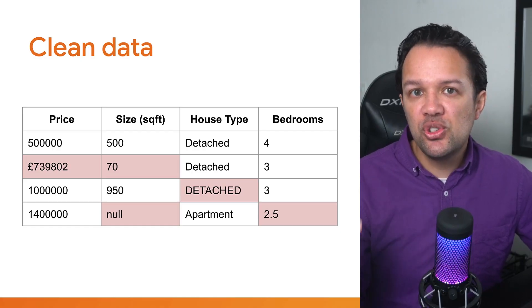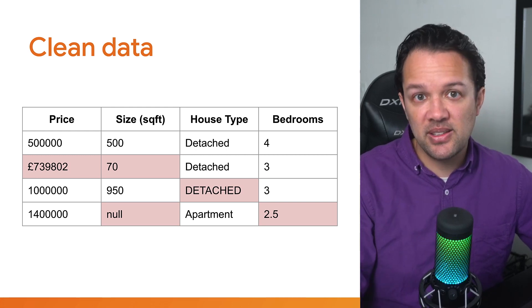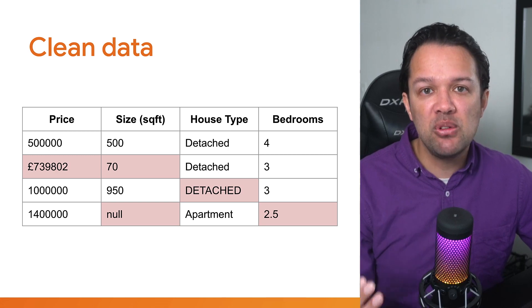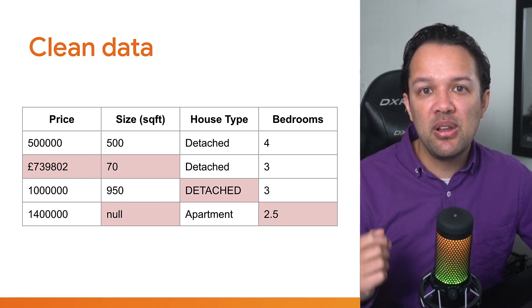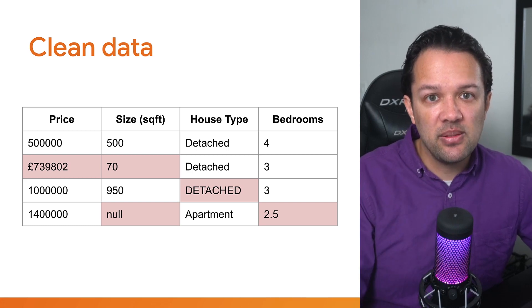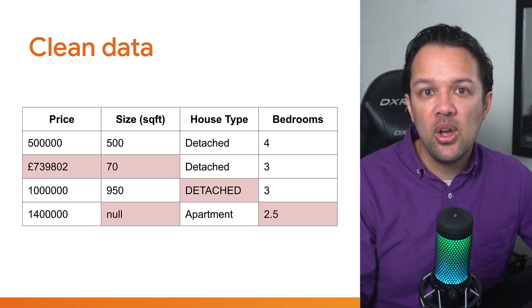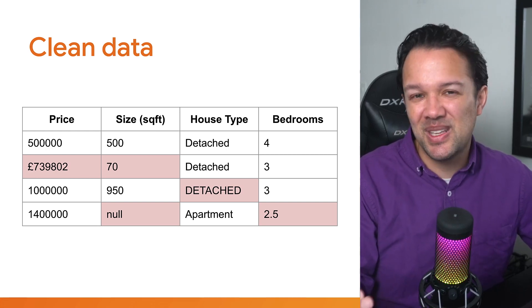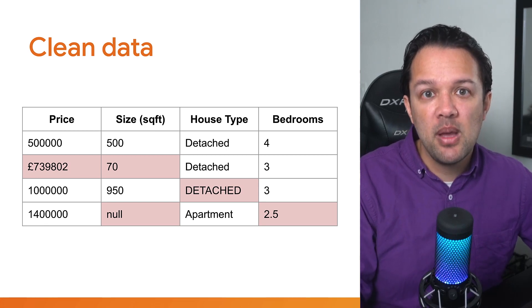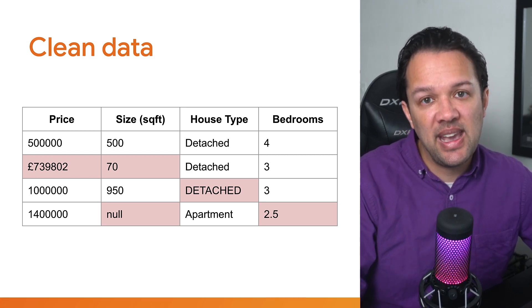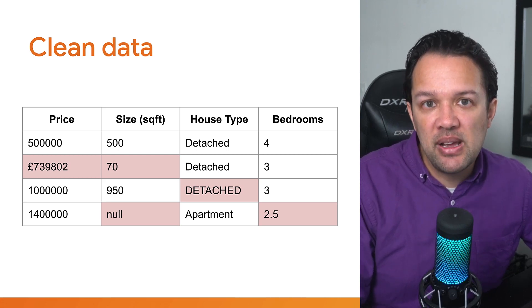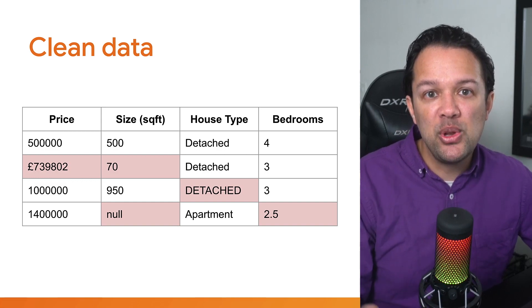You must ensure the data you use has been cleaned of any errors that could disrupt the training process. In this fictional example I've made for house data, you can see how line 2 contains data from a different country — the price and size are input using a different standard, one using British pounds instead of dollars and square meters instead of square feet. On the third line, someone used uppercase letters, but the house types are the same as the first two, which could cause issues if you assume it's a different type. On the last line, one field was not filled out at all, and someone described the apartment as having 2.5 bedrooms when you're expecting an integer value. These issues come up more than you may imagine, and if you don't fix them prior to training, your model may not perform well.